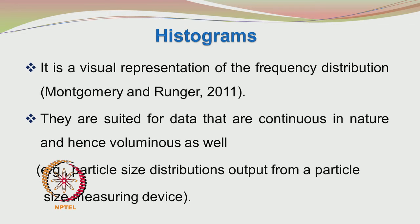Now let us come to the next mode of representation of data. We have seen data represented in the form of box plots and scatter plots. Now we want to represent data in the form of histograms. The histogram is a visual representation of the frequency distribution. They are suited for data that are continuous in nature and also voluminous. The particle size distribution output from a particle size measuring device is quite voluminous and we often represent such data in the form of histograms.